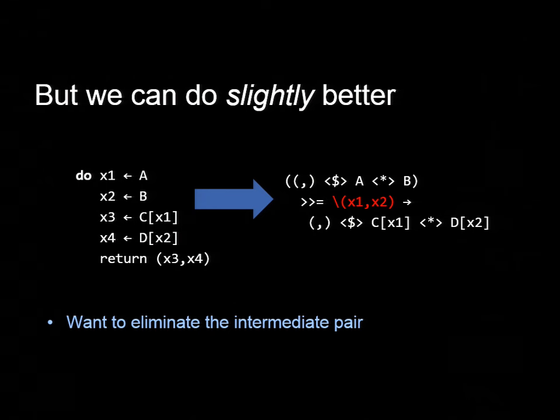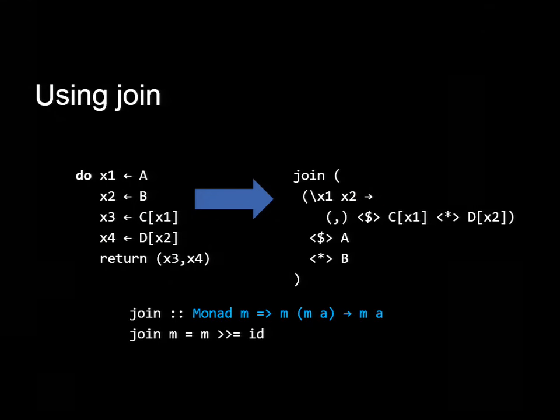But going back to this example, we can do something a little bit better than what we had. There's this pair in the middle here. We'd like not to have to build this extra pair. In order to do that, we're going to have to move this expression, the C and D in parallel, into the left-hand side of the first applicative expression. But if we move that inside, we've now got a nested computation, a computation that returns another computation. In order to flatten that nesting out, we're going to need to use the join operator. Join takes an M of M of A and flattens out those computations.